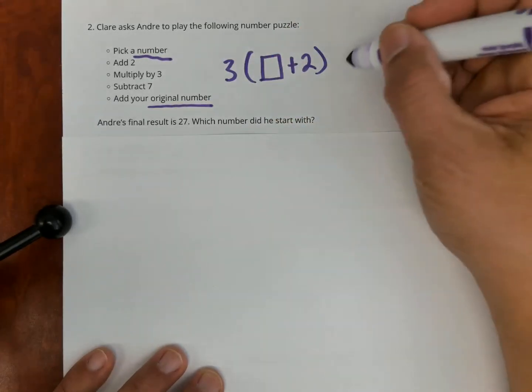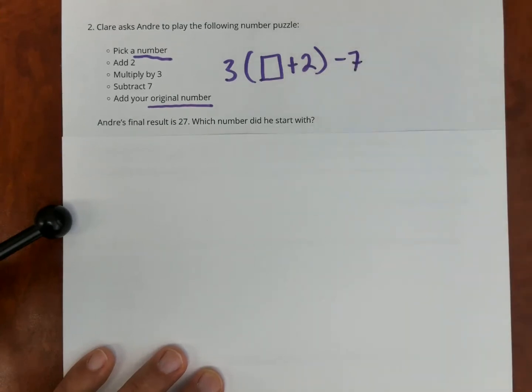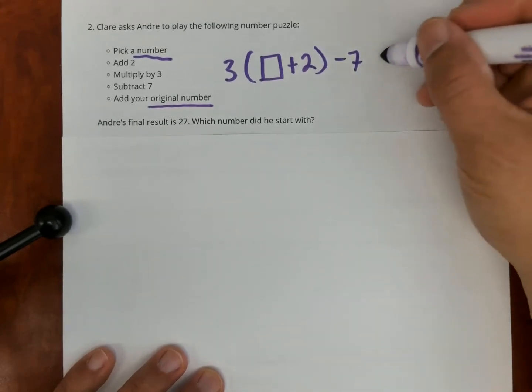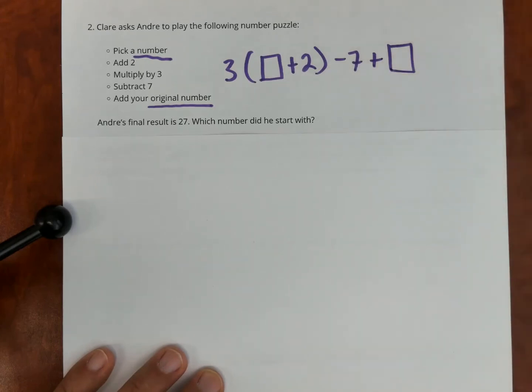Now subtract seven. Add the original number. So I'm using the box for the same number, and my number at the end is 27.